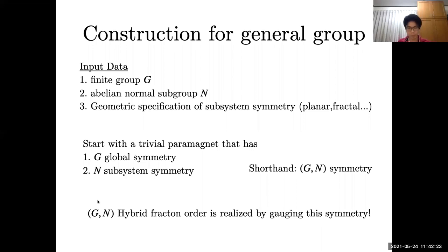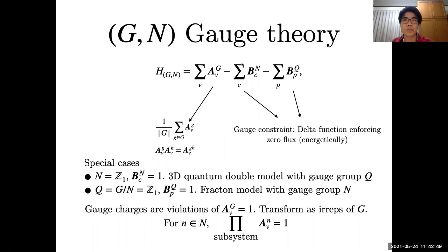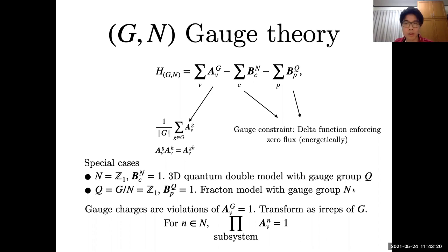We obtain a model quite similar to the quantum double model, which generalizes both the 3D quantum double model and fracton models. The Hamiltonian is a commuting projector consisting of vertex terms that enforce zero charge, and projectors enforcing zero flux on each cube and each plaquette. Importantly, when the normal subgroup is trivial — meaning no subsystem symmetry — this reduces to the quantum double. And if the normal subgroup and global symmetry are the same, so the quotient group is trivial, it reduces to the standard fracton model with abelian gauge group N.